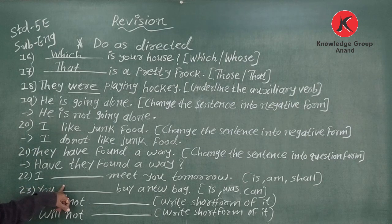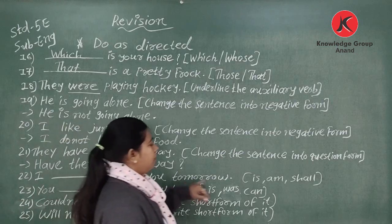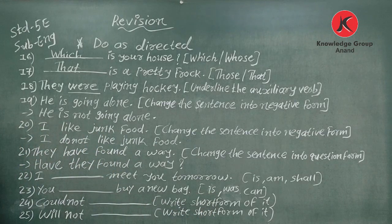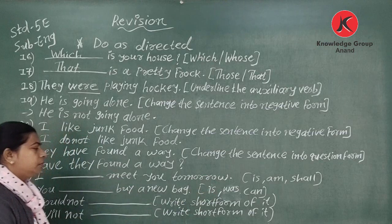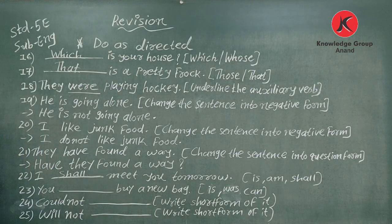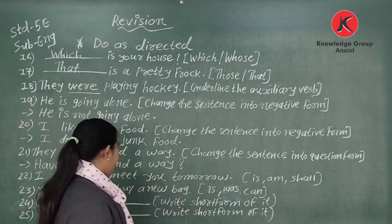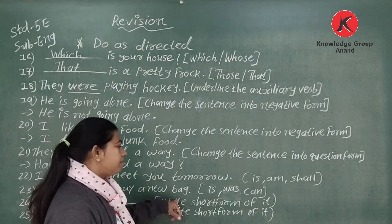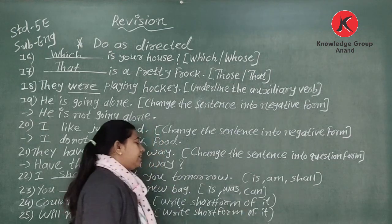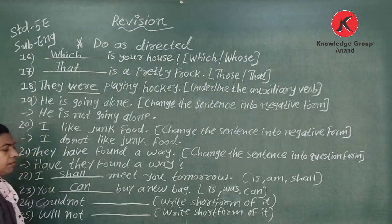Number twenty-two: 'I ___ meet you tomorrow.' Bracket says 'is,' 'am,' or 'will.' Since the sentence is future tense, we use 'will.' So: 'I will meet you tomorrow.' Number twenty-three: 'You ___ buy a new bag.' Bracket says 'is,' 'was,' or 'can.' The answer is 'can': 'You can buy a new bag.'